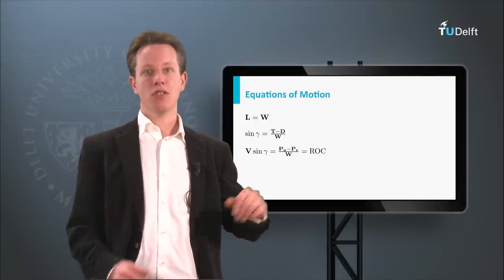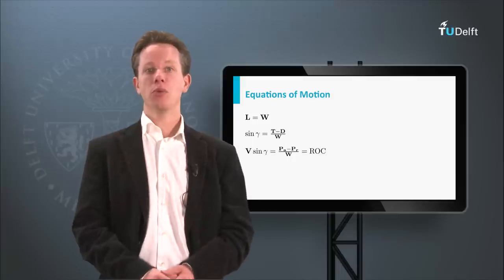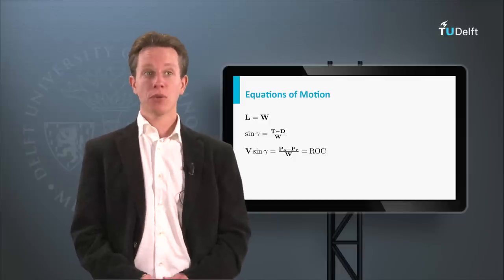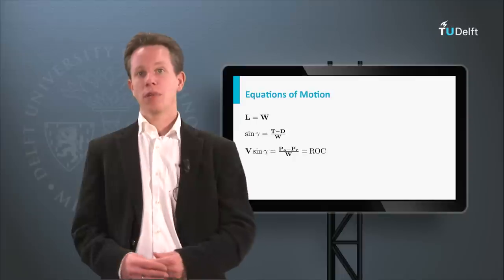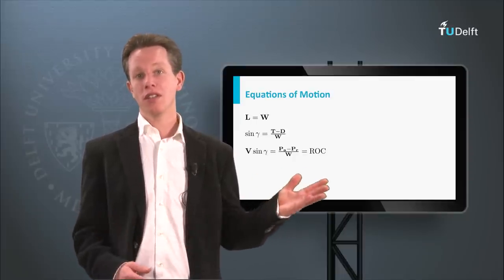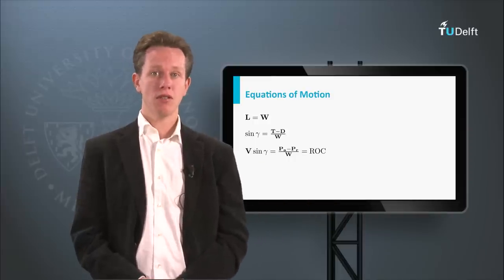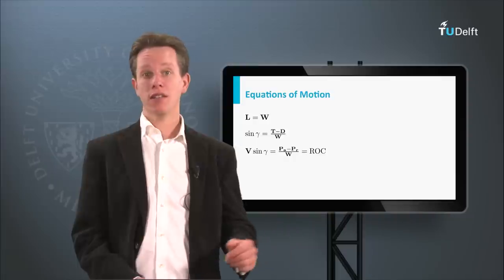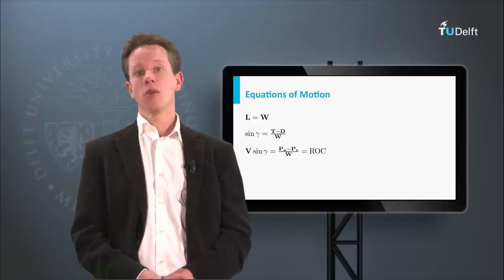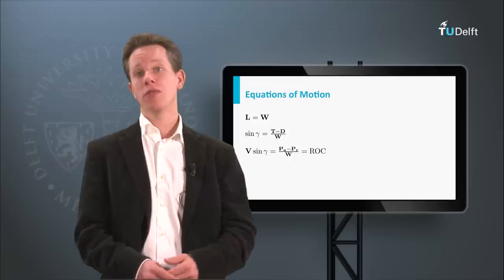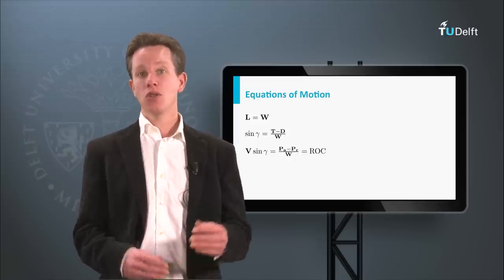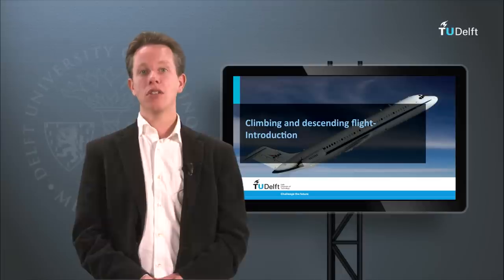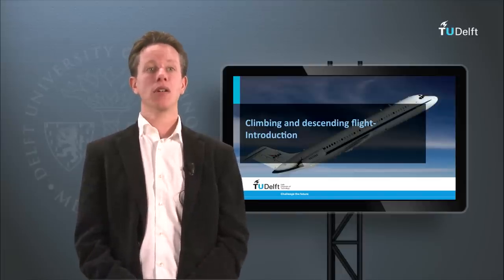So I have three equations for all aircraft climb and descent performance calculations. First, lift equals weight. Second, sine of gamma equals thrust minus drag divided by weight, used to calculate the climb angle. Third, the power equation derived from the second: rate of climb equals power available minus power required divided by weight. Note that I made several assumptions — like the small angle approximation — to arrive at these simple equations. This greatly simplifies calculations and allows analytical solutions without significantly affecting the final result. If you want high accuracy without these assumptions, you should use a numerical approach. In the next video I will apply these equations to calculate the maximum climb angle for a specific aircraft.